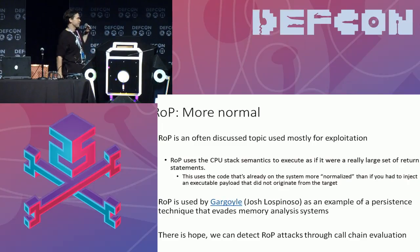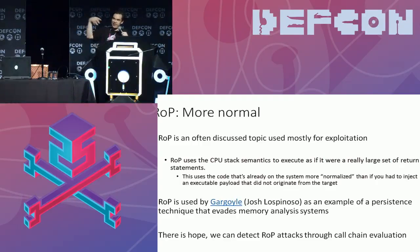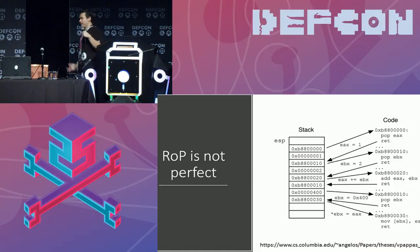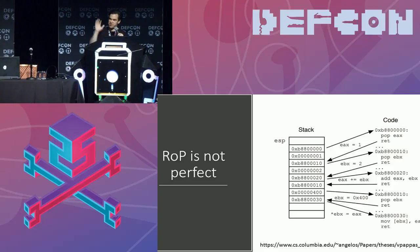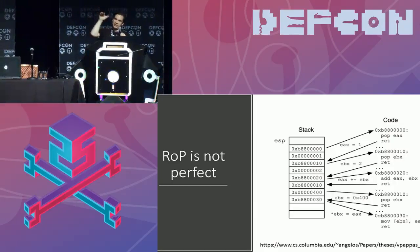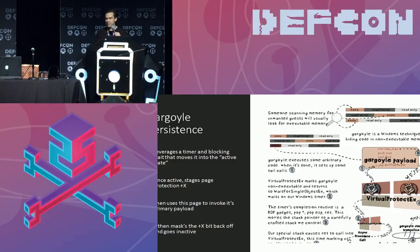On ROP: it's becoming not just an exploitation technique but now a persistence method. Gargoyle was the public example of how to use a ROP chain for persistence rather than just an exploit. It waits on a timer, evaluates the stack, and sets up a window to jump in and out of — jumping into one page on a timer. The way this ROP works, it actually gets a little easier to detect because it's not exactly perfect either.